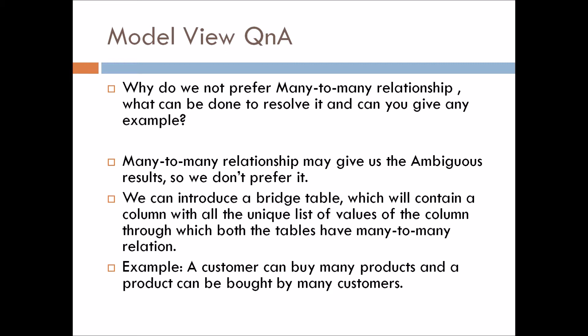You have to answer like this: Many-to-many relationship may give us ambiguous results, so we don't prefer it in our model. You can also say that I have tested it personally and we sometimes get ambiguous results, so we don't prefer many-to-many relationship. You can add this point also.